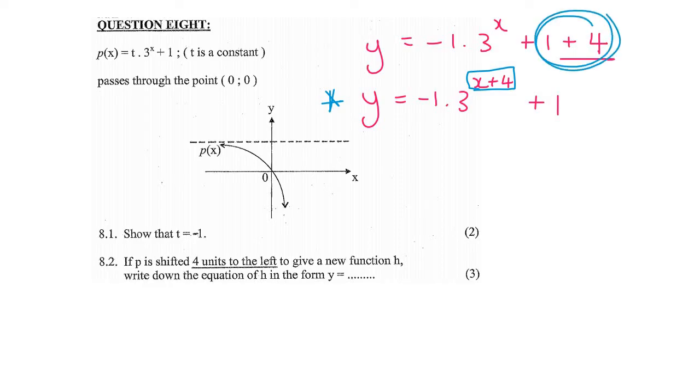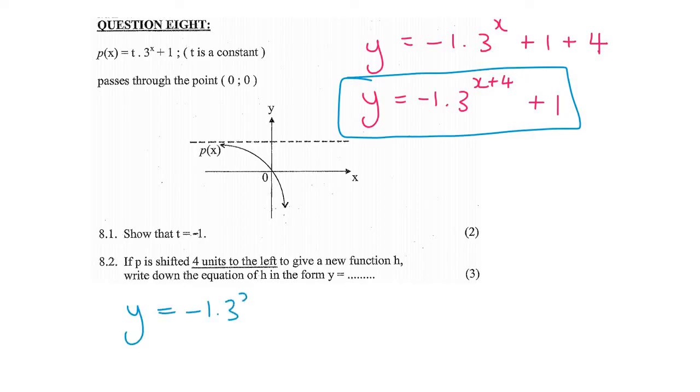We definitely do not want to do it like this, because plus 4 over here means that you're moving the graph four places up. But when you change it here by the x's, then it's going to the left, and so this is the final answer for that question. Let me just write it down: y equals minus 1 times 3 to the x plus 4, plus 1.